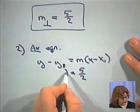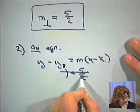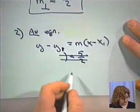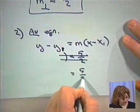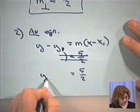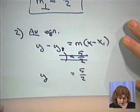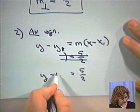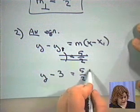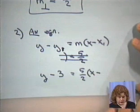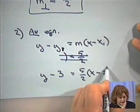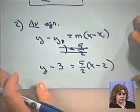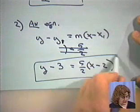Our new slope is 5/2. The point we were given was (2, 3), so y minus the y-coordinate, 3, and x minus the x-coordinate, 2. And all we had to do was substitute. This is done. I have an equation.